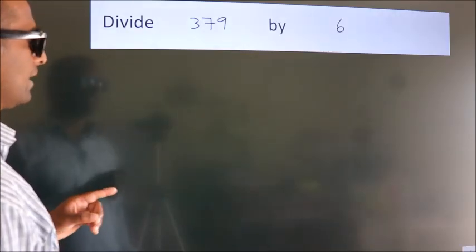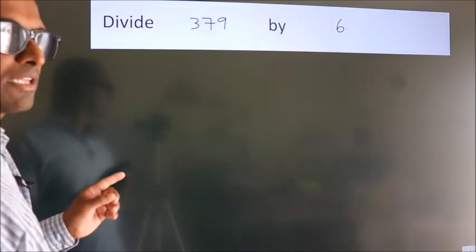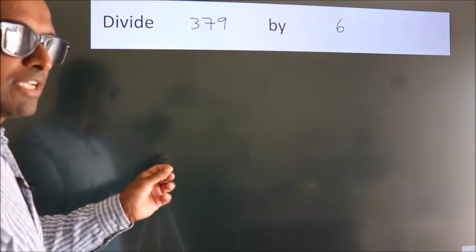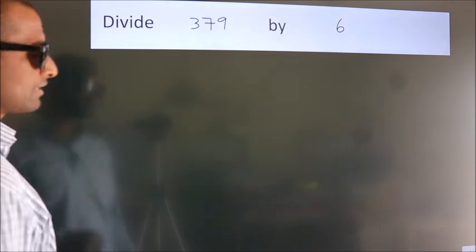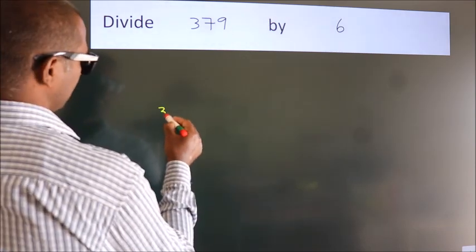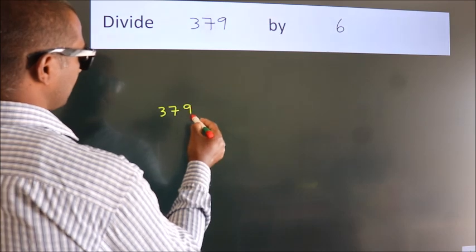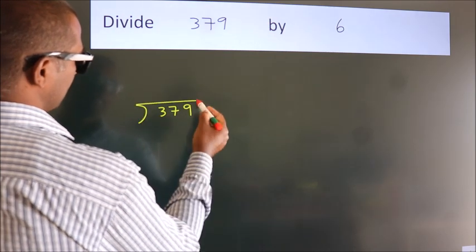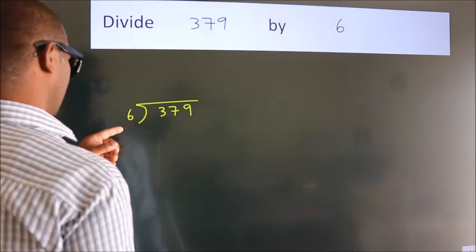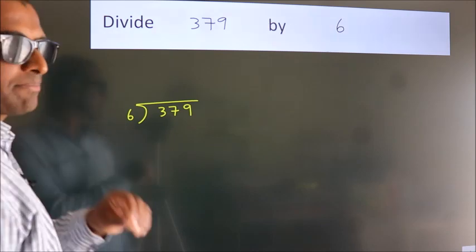Divide 379 by 6. To do this division, we should frame it in this way. 379 here, 6 here. This is your step 1.